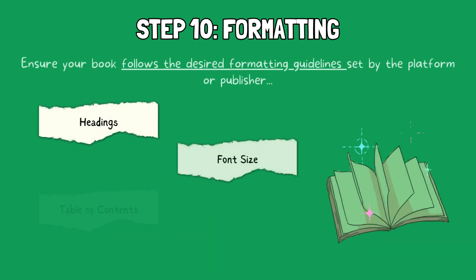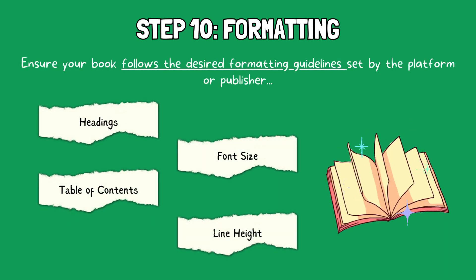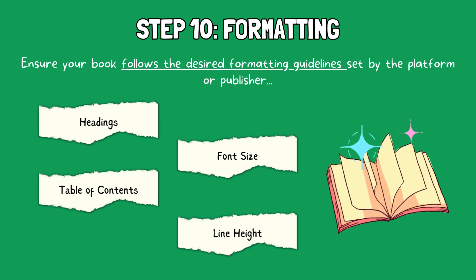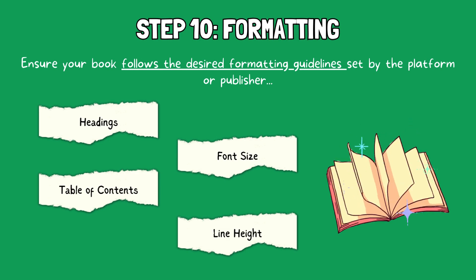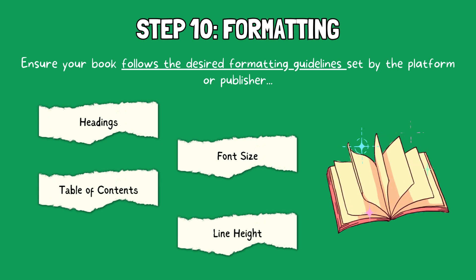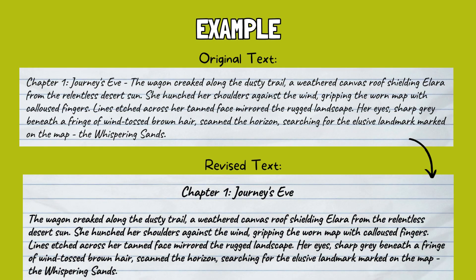Step 10: Formatting. Ensure your book follows the desired formatting guidelines set by the platform or publisher you hope to publish your book with. Check chapter headings, font consistency, and any other formatting elements. In this example, we can see a couple of formatting issues with the chapter heading and missing space between the chapter heading and the first paragraph. The revised version looks much better and easier to read.